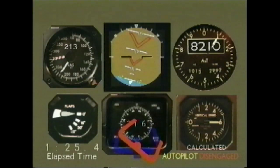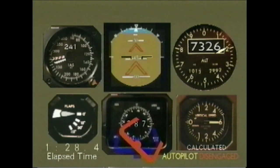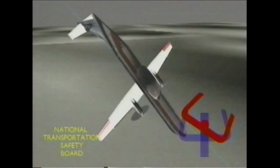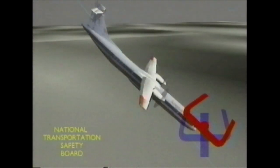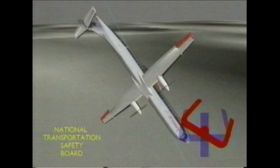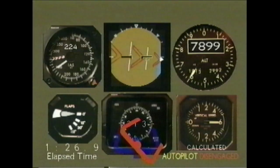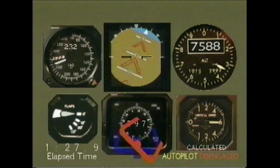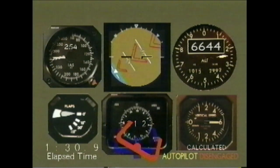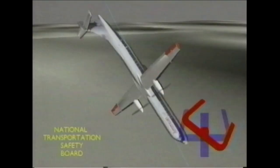The pilots grabbed the controls and struggled to level out, but the speed of the roll was too great. It yanked the controls out of their hands, and the nose dived toward earth. As they burst through the clouds, the ground filled their windshield, rushing toward them at 400 miles per hour.